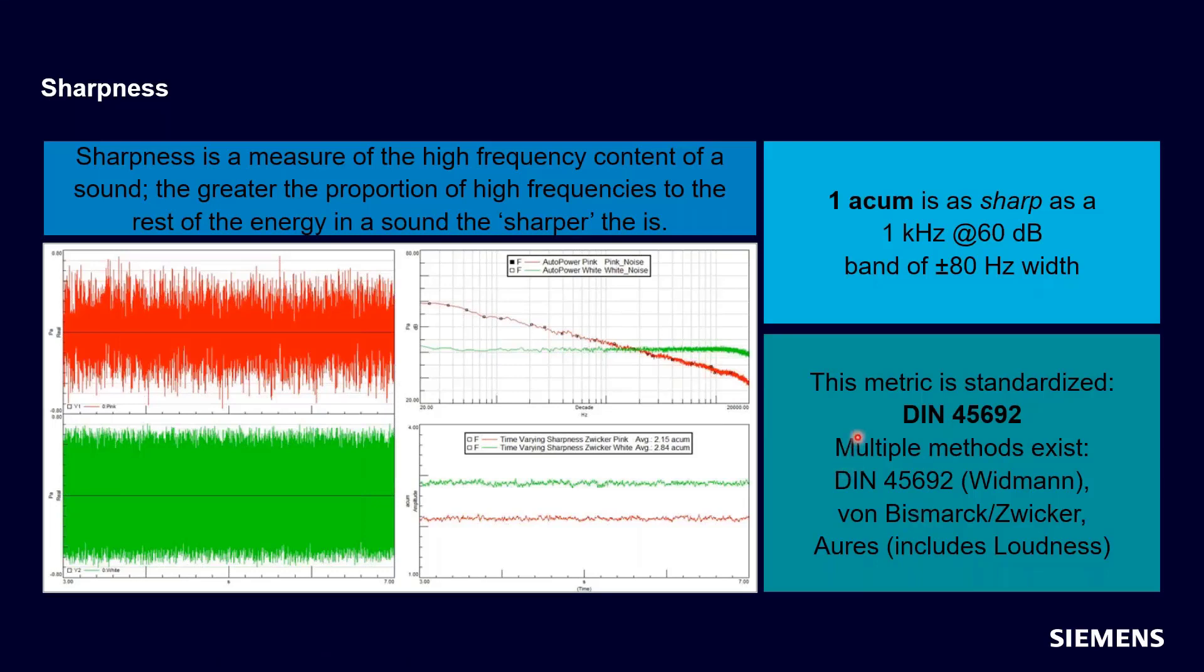Sharpness has a standard. There is a DIN standard, 45692. There are multiple formulations. I'm going to show you those. They're all very similar. They all are after the exact same thing. They just have a little bit different take on how best to do it. So this plot here, despite being shown in red and green, is just two very familiar test signals, white noise and pink noise.